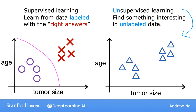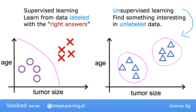This is unsupervised learning. We call it unsupervised because we're not trying to supervise the algorithm to give some right answer for every input. Instead, we ask the algorithm to figure out all by itself what's interesting or what patterns or structures there might be in this data. With this particular dataset, an unsupervised learning algorithm might decide that the data can be assigned to two different groups or two different clusters. This is a particular type of unsupervised learning called a clustering algorithm because it places the unlabeled data into different clusters.